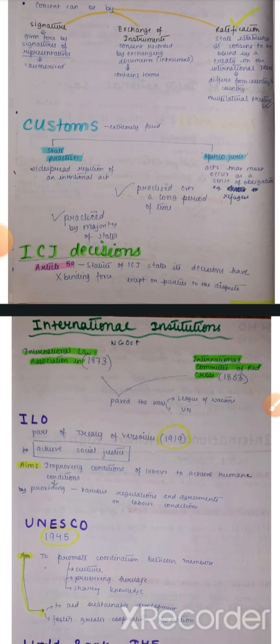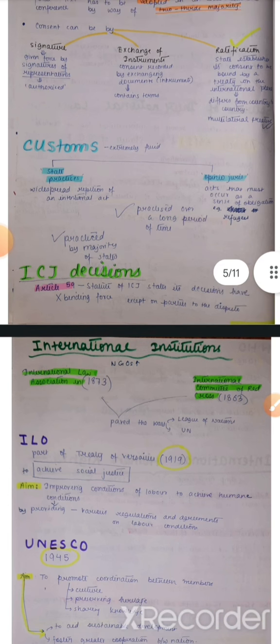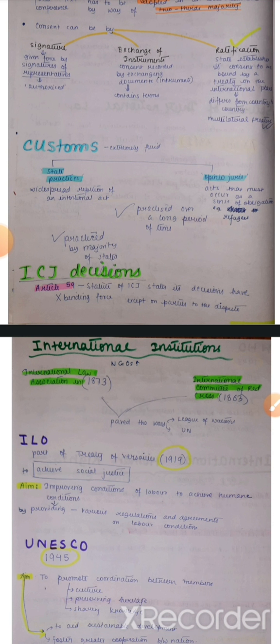For instance, jab ek refugee humare desh mein aate hain, tab hum unhe bhagaa nahi dete — we have to give them asylum. That's a custom. India toh ek aisa desh hai jahan hum atithi ko bhagwan maante hain — Atithi Devo Bhava. Toh ye custom hai humare. That's why when there was the Tibet crisis, Dalai Lama wahan se yahan aa gaye — aur ab woh Dharamshala mein rehte hain. Our custom says that we have to give them asylum, give them shelter in our country.